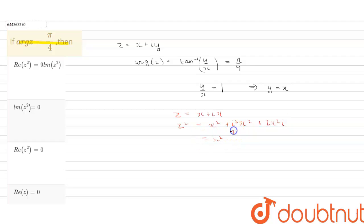Now iota squared equals minus 1. Therefore this equals minus x squared plus 2x squared iota, which equals 2x squared iota. So the value of z squared equals 2x squared iota.